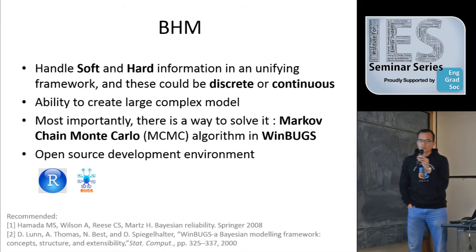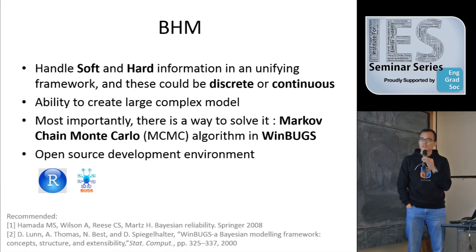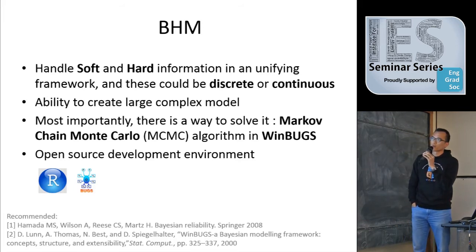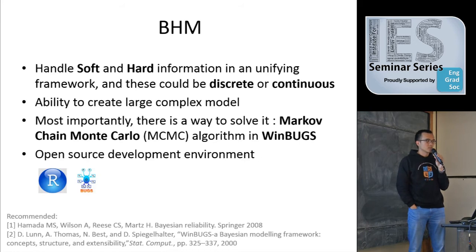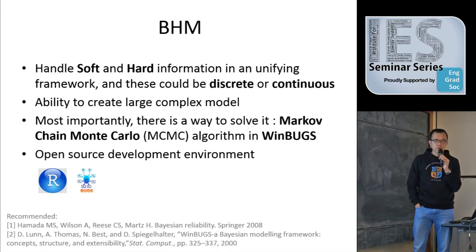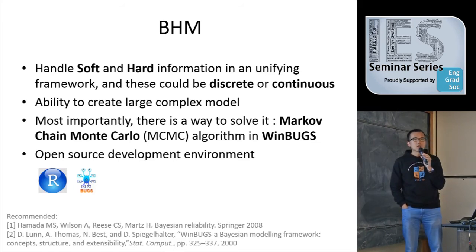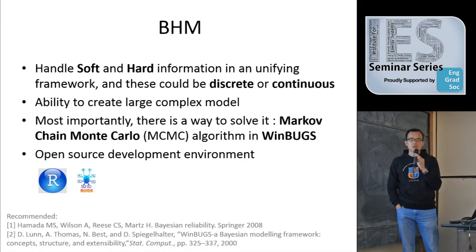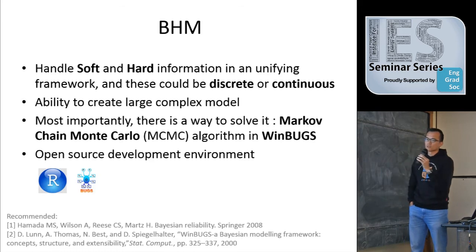So why did I use Bayesian Hierarchical Modeling? I want to use all the information collected. First, you can handle soft and hard information in a unifying framework. When I say soft, that means beliefs — not related to any data. Hard information is the data collected through the process, like time-to-failure information, warranty records, SCADA data, geographical data. This could be discrete — like a one or zero indicator — or continuous, like voltage, current, or temperature. Second, people use this method to create large complex models with thousands of nodes.